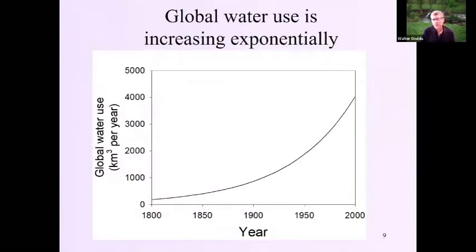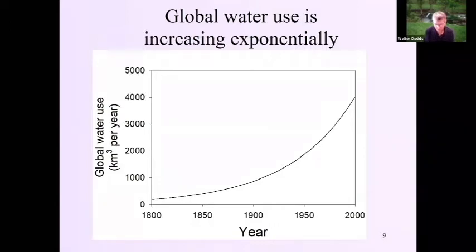And globally, water is one of the most limiting factors. This chart shows global water use in cubic kilometers per year, and we see it increasing exponentially. This increase pretty much follows the human population increase, which is also increasing exponentially.